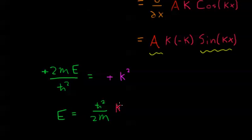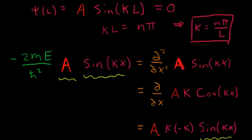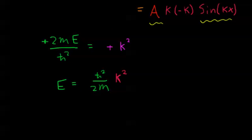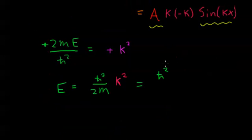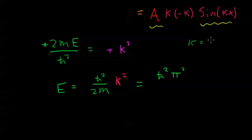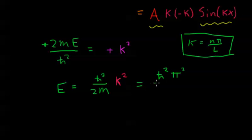Then if we use the requirement on k that we found earlier — that k equals some integer n times π over L — we substitute that in. Squaring k gives us k squared equals n squared times π squared over L squared. So E equals h-bar squared times π squared over 2m times L squared, times n squared.